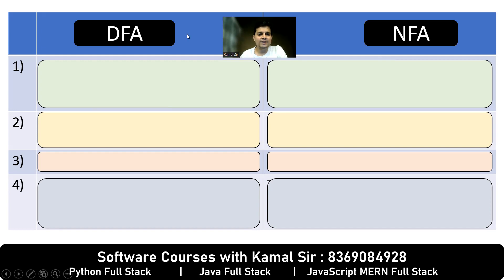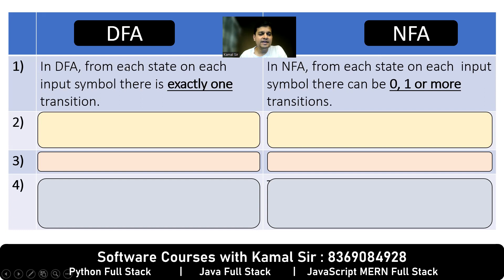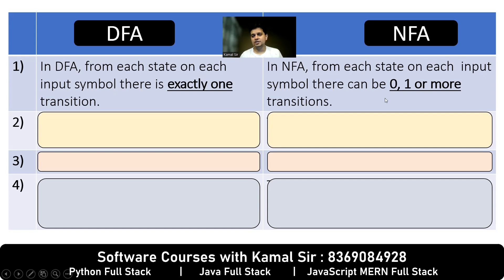Point number 1: in DFA, from each state on each input symbol there is exactly one transition. In NFA there can be 0, 1 or more transitions. DFA implementation is easy whereas NFA is difficult.